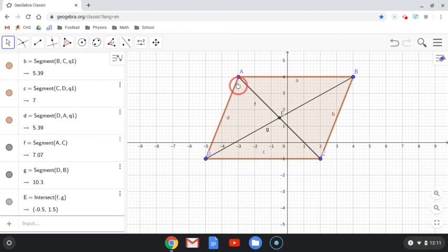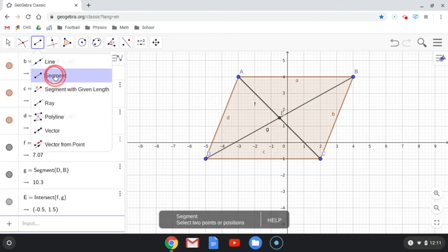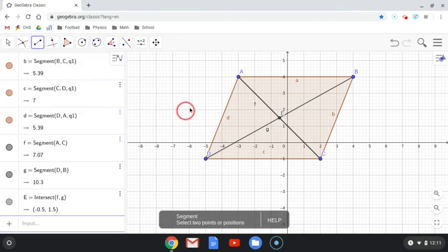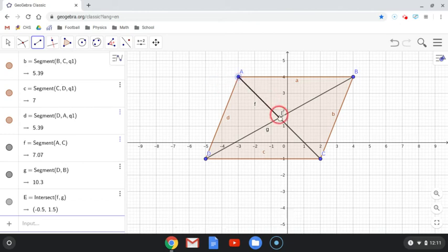Let's say I wanted to measure the segment or length of A to E. What I'm going to do is use the segment tool. I'm going to click on my line tool and choose segment. And if I want to know its length, I'm going to click on the two points that I want to know. So, A to E.